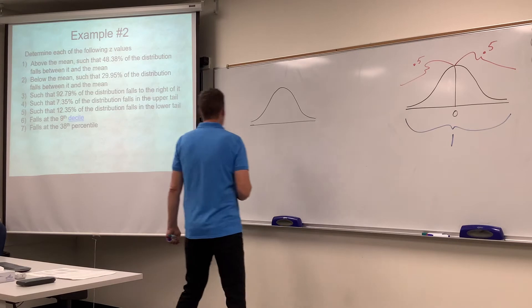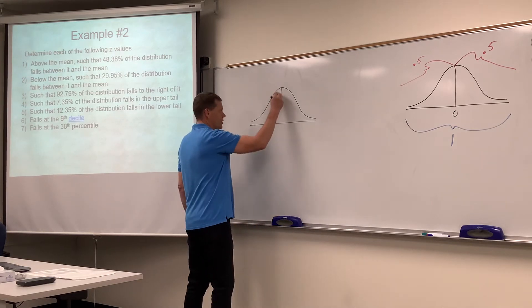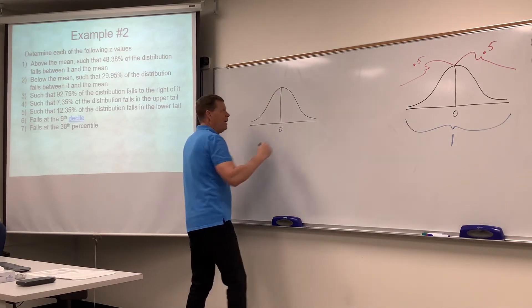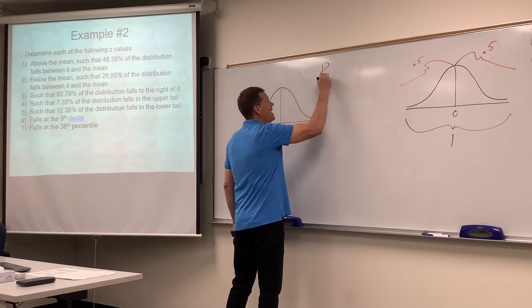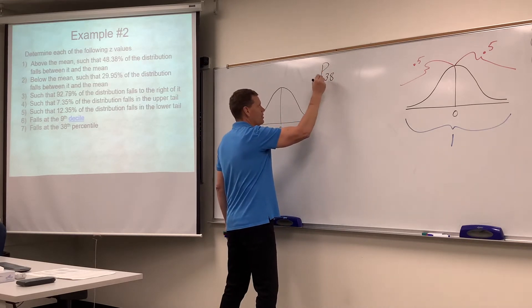This time they want us to find the z-score, bell curve, zero in the middle, standard normal, that corresponds to the 38th percentile. Percentile 38.